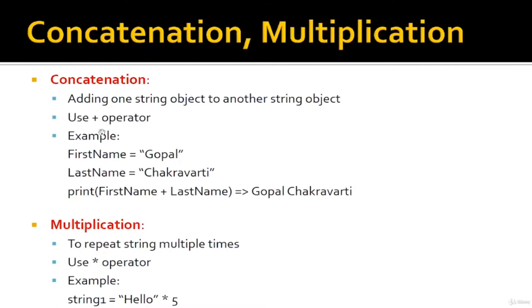Next, we will learn concatenation and multiplication in terms of strings. Concatenation means adding one string object to another using the plus operator. For example, with first_name = 'Gopal' and last_name = 'Chakravarti', when we concatenate first_name + last_name, we get 'GopalChakravarti' as a single string.